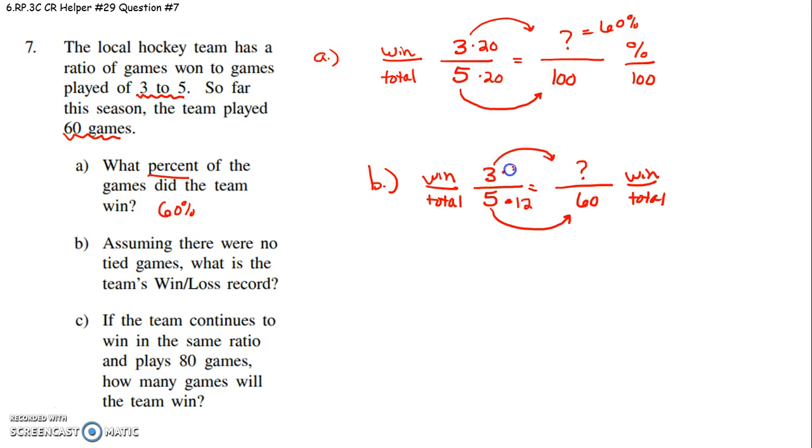So therefore, we have to multiply 3 by 12. They win 36 out of 60 games. Well, if they won 36, what was their loss?